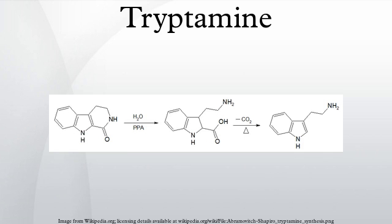Tryptamine is a monoamine alkaloid. It contains an indole ring structure and is structurally similar to the amino acid tryptophan, from which it derives its name.